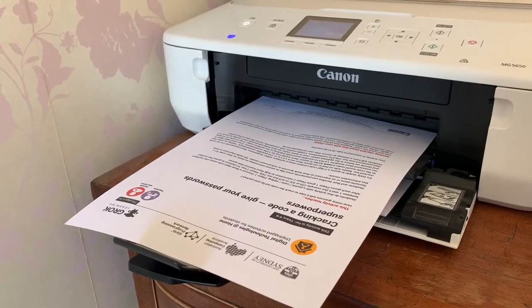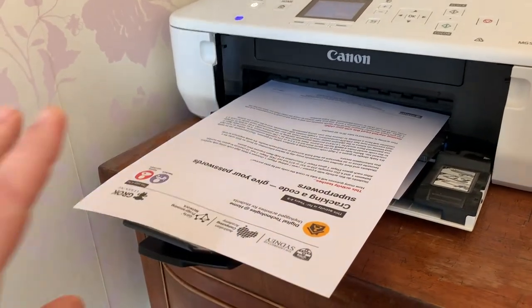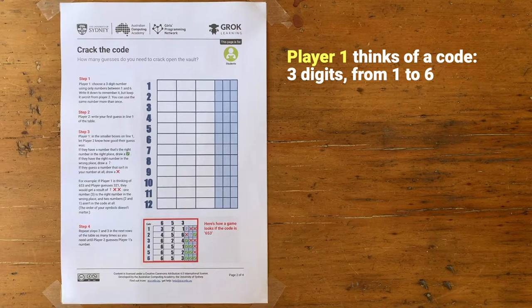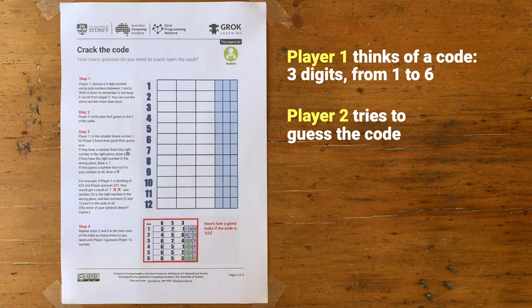Hey everybody, I've just downloaded the Australian Computing Academy's DT At Home Activity: Crack the Code. It's a game for two players. Player 1 thinks up a code and Player 2 tries to figure out how to crack it. Here's how it works. Player 1 thinks of a code — three numbers, each between 1 and 6. Player 2 has to try to guess that code from the hints that Player 1 gives as they go along.